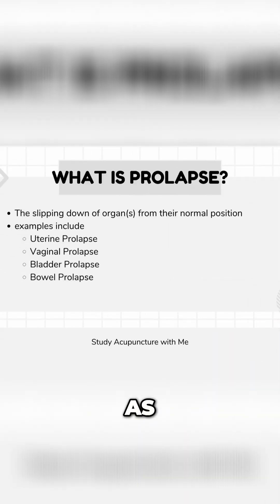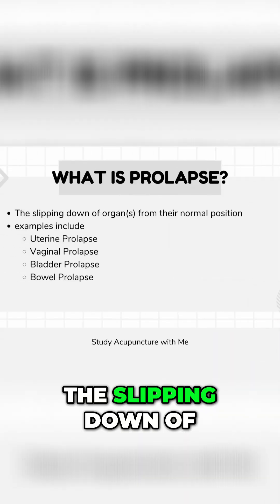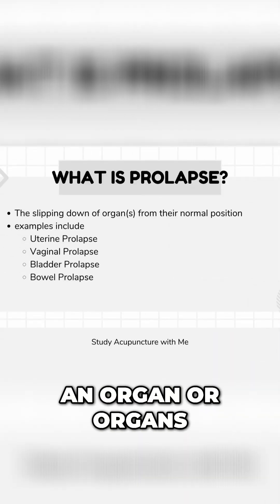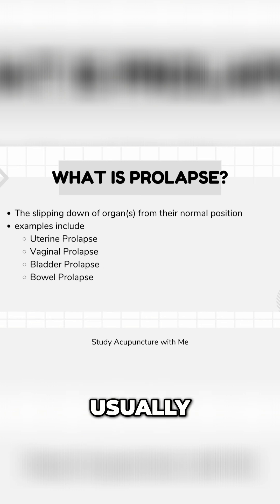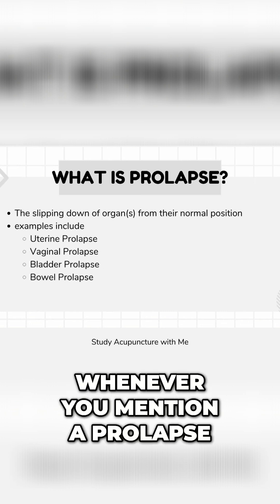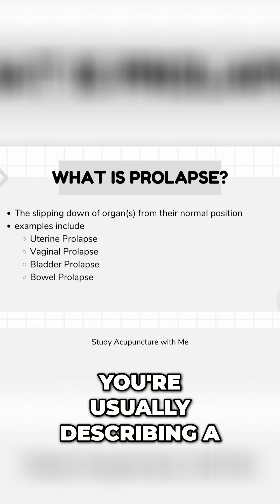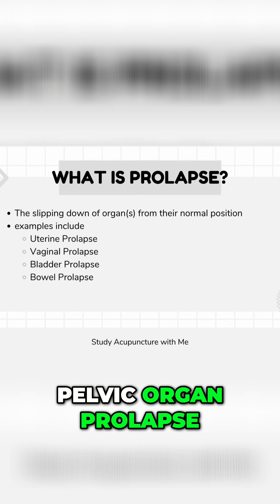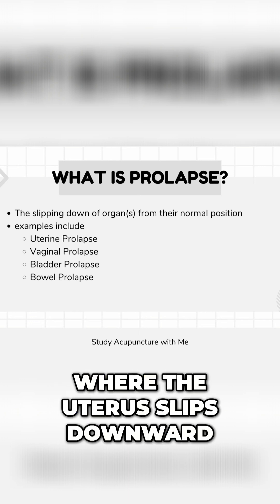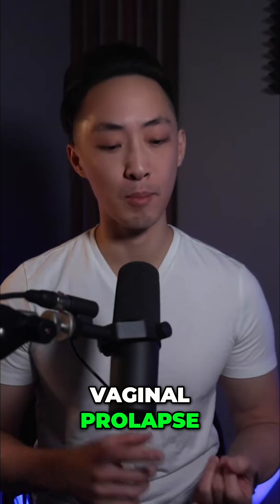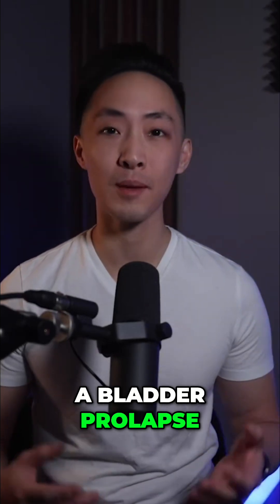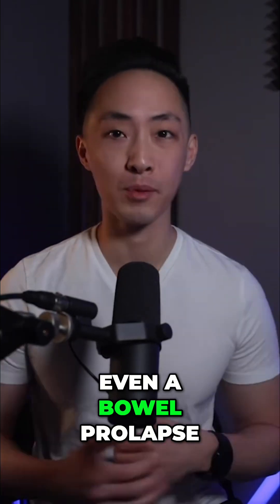Prolapse is defined as the slipping down of an organ or organs from their normal position. Usually, whenever you mention a prolapse, you're usually describing a pelvic organ prolapse. That could be a uterine prolapse where the uterus slips downward. It could be a vaginal prolapse, a bladder prolapse, even a bowel prolapse.